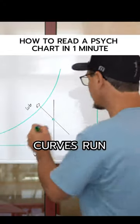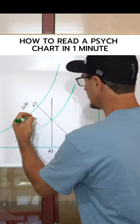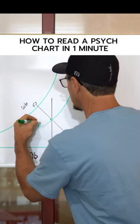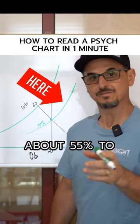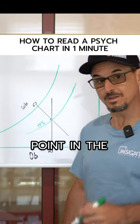Relative humidity curves run like this. Happens to be about 55% to find the dew point in the space.